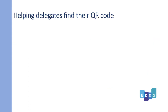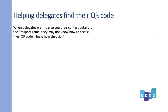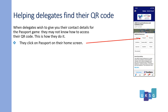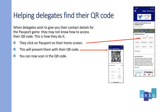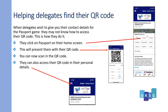Helping delegates find their QR code. When delegates wish to give you their contact details for the Passport Game, they may not know how to access their QR code. This is how they do it: they click on Passport on their home screen, which will present them with a QR code. You can now scan in the QR code. They can also access their QR code in their own personal details.